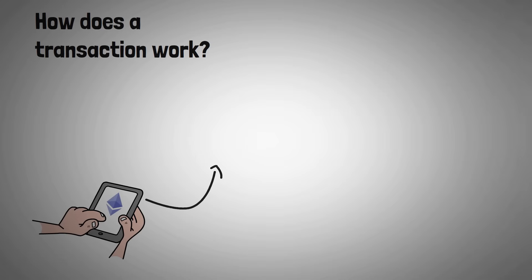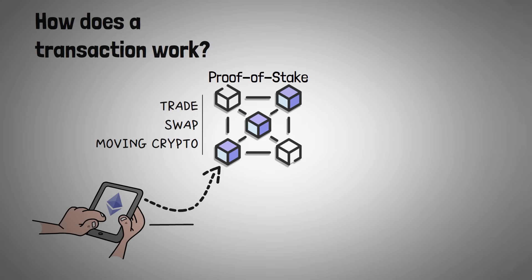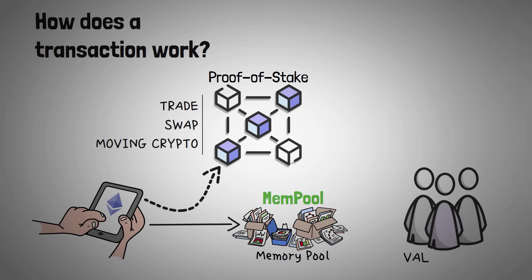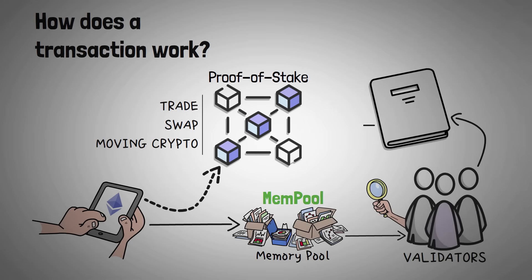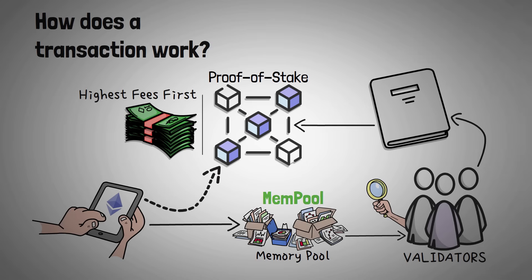To understand MEV, we first need to talk about how blockchain transactions get processed. When you send a transaction on a proof-of-stake blockchain like Ethereum, whether it's a trade, a swap, or just moving crypto from one wallet to another, it doesn't get added to the blockchain immediately. Instead, it first goes to something called the mempool, short for memory pool, which is like a waiting room where transactions sit before they're picked up by the validator. Validators decide which transactions to include in the next block, and they usually pick the transactions with the highest fees first. But also, since they're in control of the order, they have the power to extract extra profit.